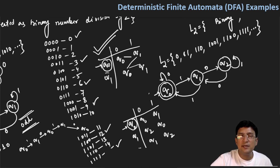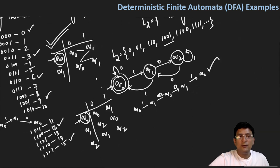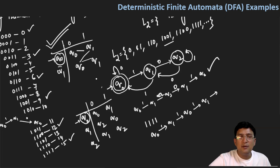इनमें से कुछ strings को accept करके दिखाते हैं। 1001 लेते हैं: q0 से 1 मिलने पर q1, 0 मिला q2, फिर 0 मिला q1, और 1 मिला q0 जो final state है — accept हो गया। एक और string 1111 लेते हैं: q0 से 1→q1, 1→q0, 1→q1, 1→q0 जो final state है। So you can see that this string is accepted. It means that this automata is correct.